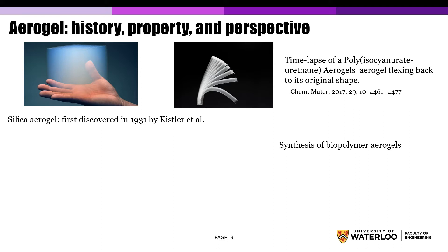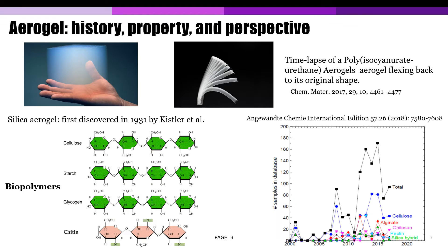For example, the polyisocyanate urethane aerogel shown in the picture can recover to its original state within a second. In recent years, more and more researchers have focused on biopolymer aerogels, motivated by more sustainable precursors compared to oil-derived precursors. Among all polysaccharide-based aerogels, cellulose makes up around 45% of the total publications.